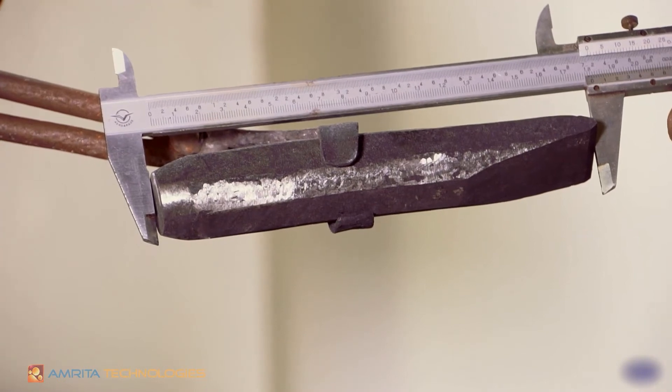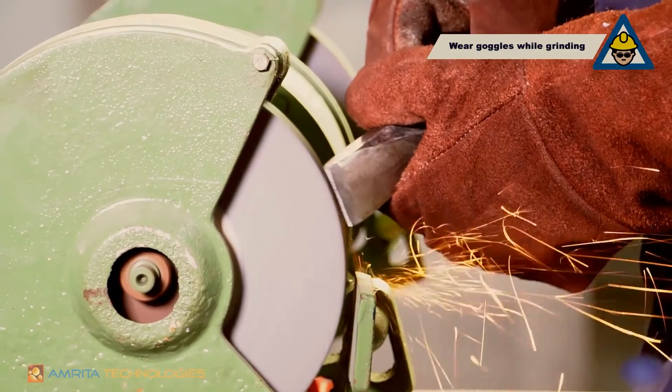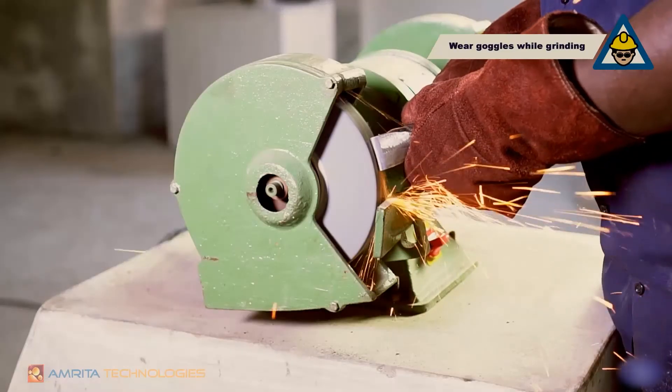Check the dimensions. Use goggles while grinding. Grind the cutting edge of the chisel to a 60 degree angle and check.